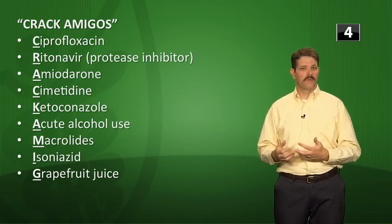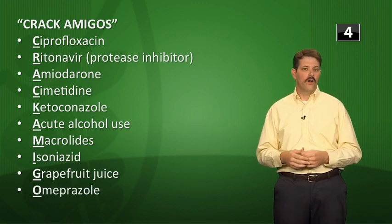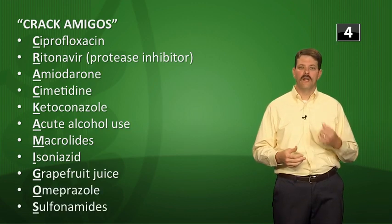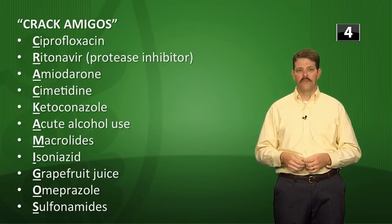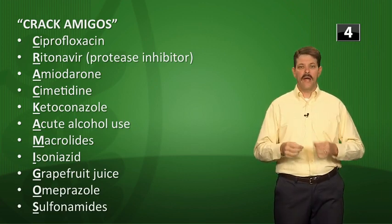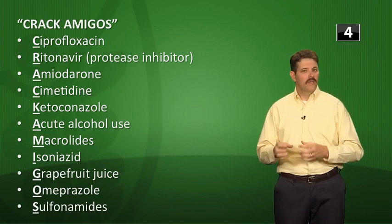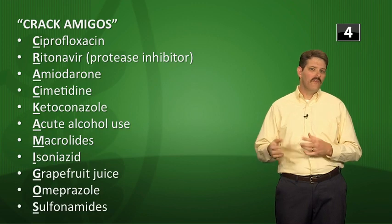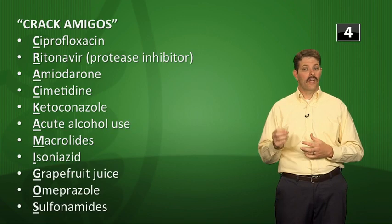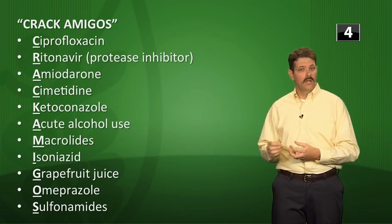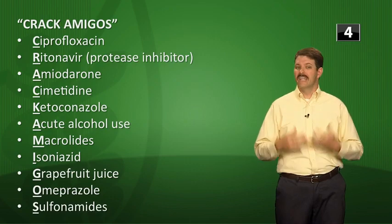Continuing CRACK AMIGOS: M is for macrolides like erythromycin or azithromycin, I is for isoniazid, G is for grapefruit juice — not just drugs but diet and supplements affect drug metabolism — O is for omeprazole, and S is for sulfonamides. To remember which list is inhibitors vs. inducers, think: crack cocaine is dangerous and you should inhibit yourself from using it, or drug cartels inhibit law and order.